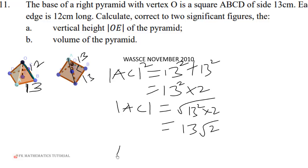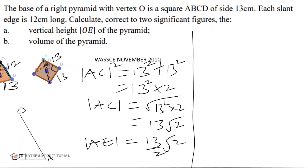Now AE will be half of that, so AE equals 13 over 2 times √2. Now let us extract triangle OEA. We know this is the right angle, so again we can use Pythagoras theorem. OE squared plus EA squared equals OA squared.